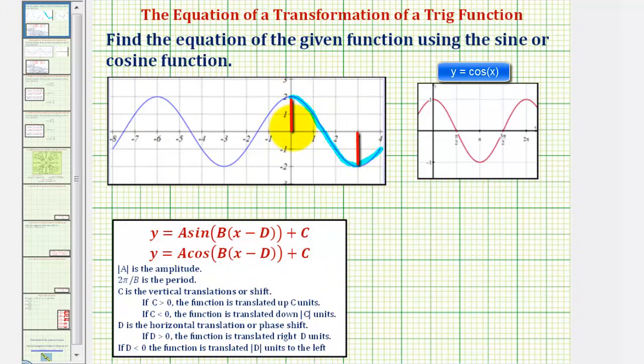And because we have a maximum function value at x equals zero, just like the basic cosine function, there's no reflection across the midline, and therefore a is equal to positive two. Remember, the absolute value of a is the amplitude. So a is equal to positive two.